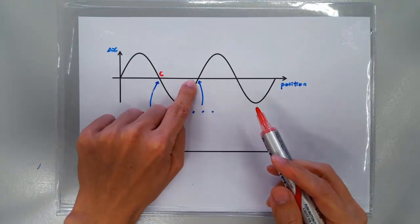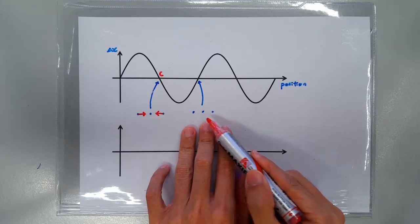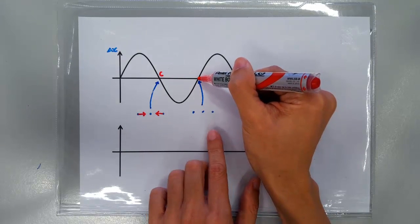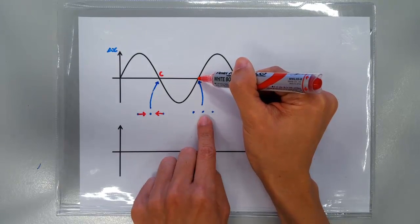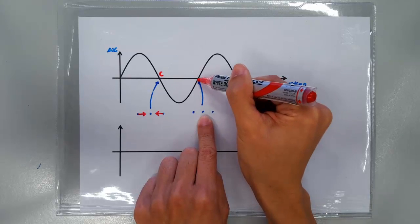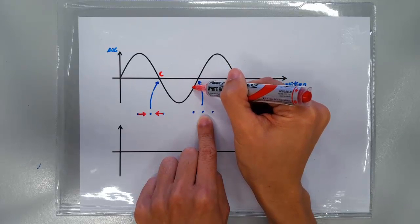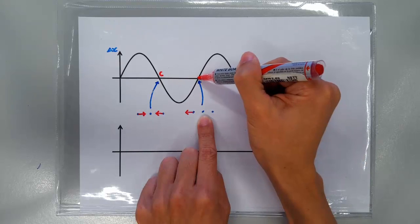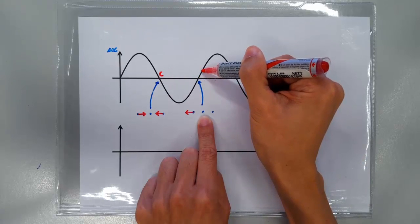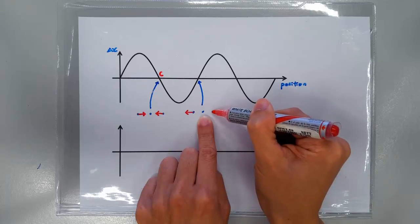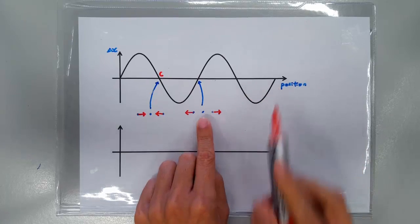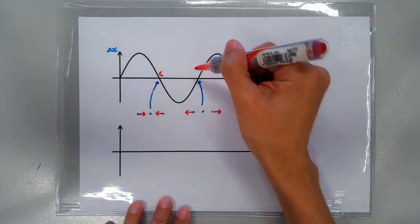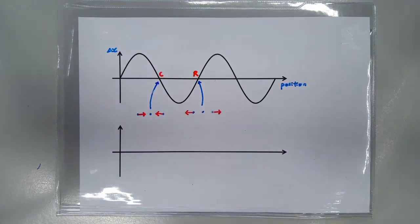What about at this location? Again, these are three air molecules at their equilibrium position. This guy has got a displacement of zero, so he stays put. His neighbor on the left has got a negative displacement, so this guy is displaced further to the left. His neighbor on the right has got a positive displacement, so his neighbor on the right is displaced further to the right. This means that at this position, the air molecules are more spaced out than usual. So what we have here is the region of rarefaction.